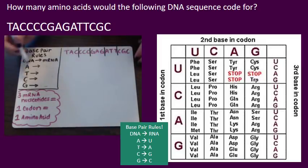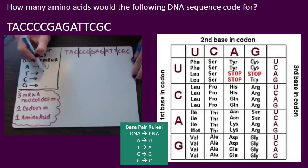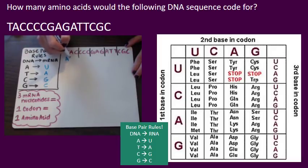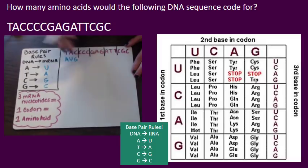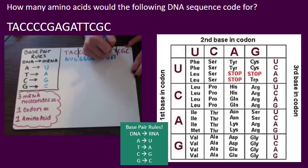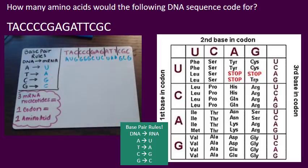So first, base pair rules: A bonds with U, T bonds with A, C bonds with G, G bonds with C. Let's use those rules to find our messenger RNA strand. Next, we're going to use the codon chart to start figuring out our amino acid sequence.